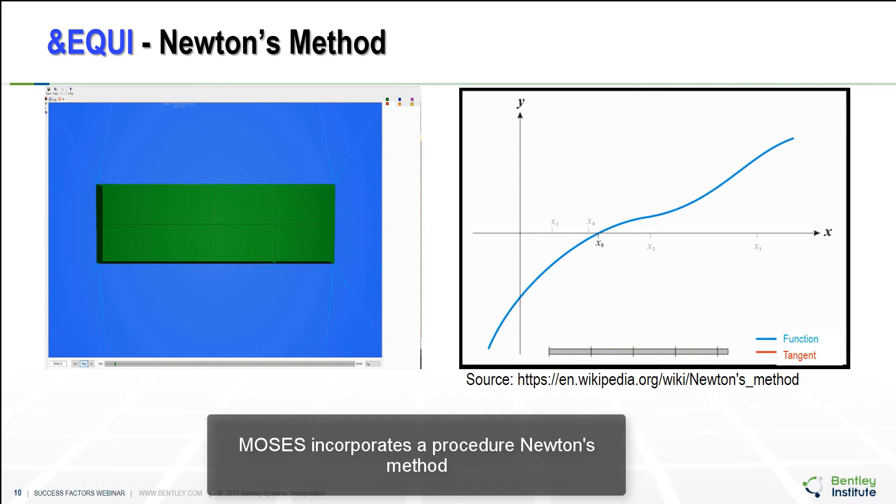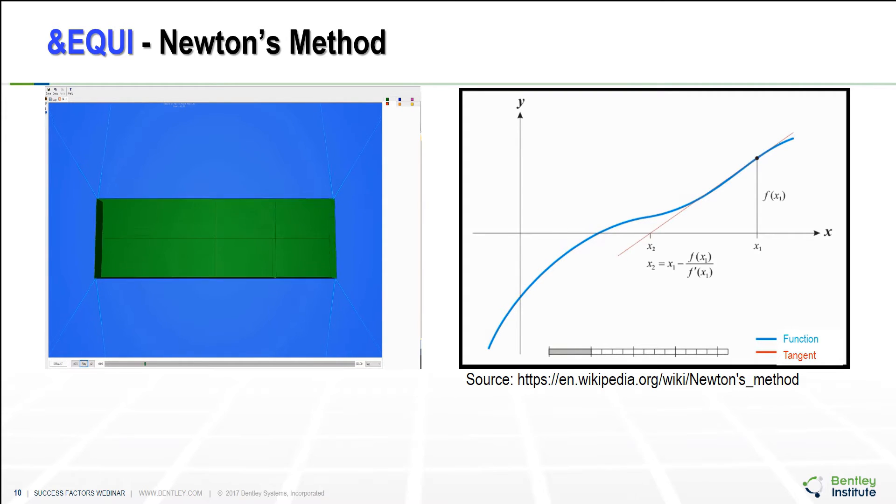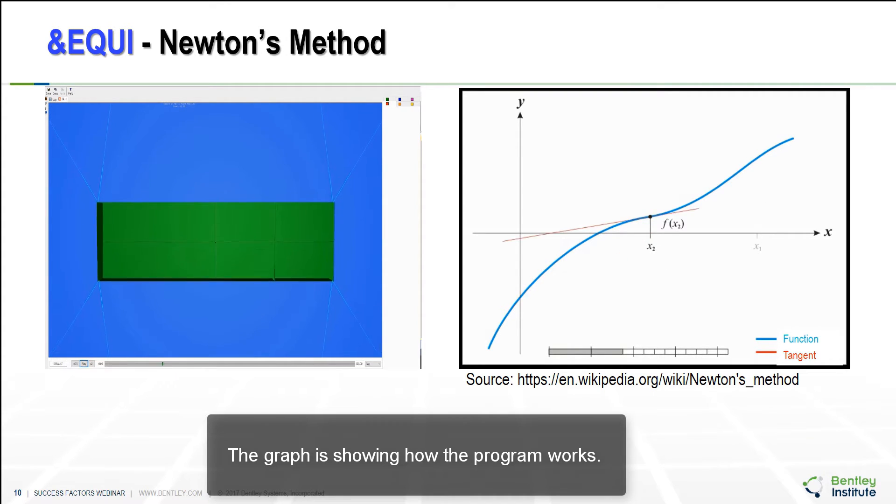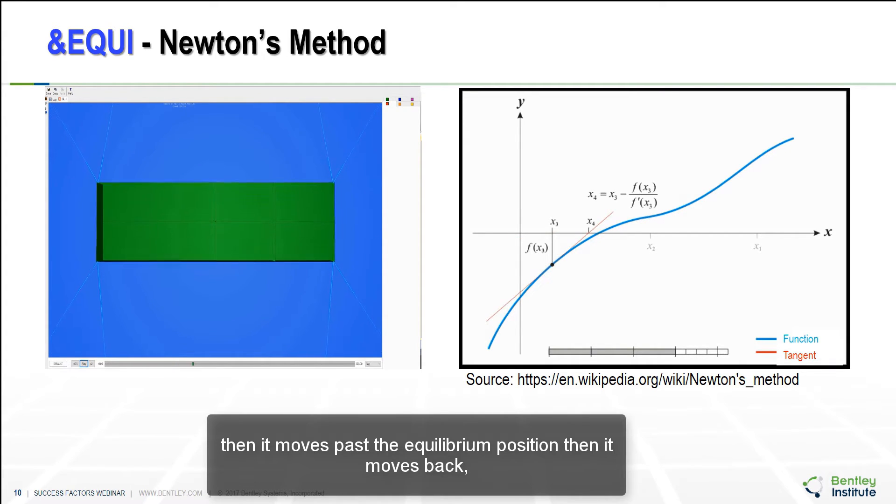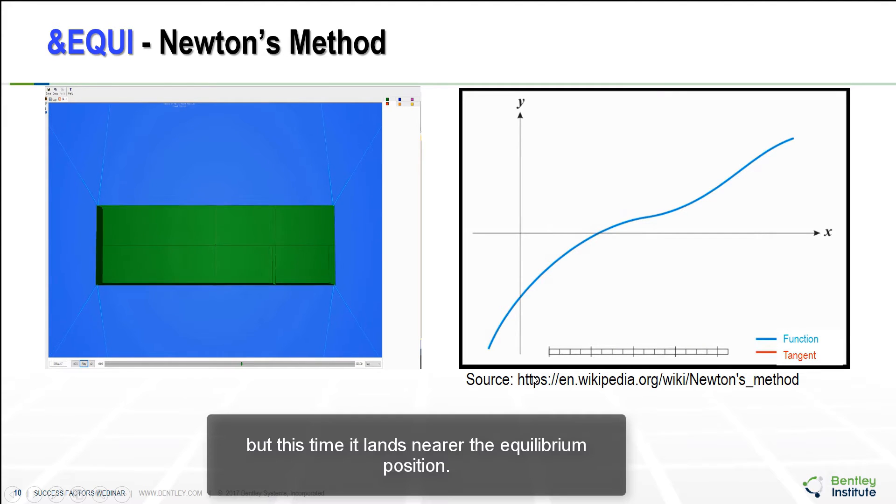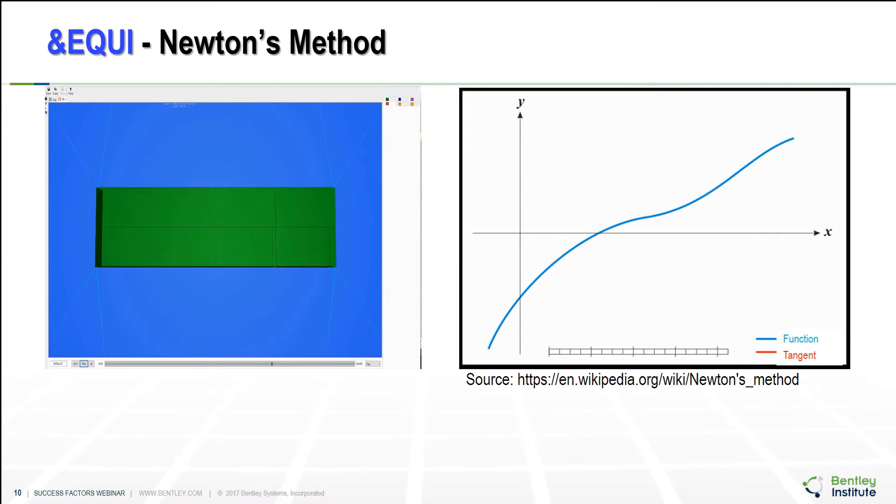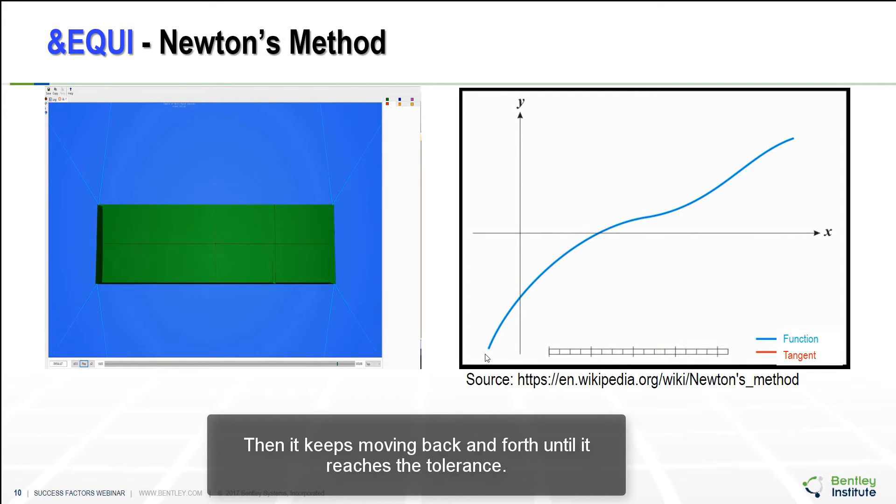Moses incorporates a procedure Newton's method to solve the non-linear equations for finding equilibrium. The graph is showing how the program works. It starts somewhere on the curve, then it moves past the equilibrium position, then it moves back. But this time it lines near the equilibrium position. Then it keeps moving back and forth until it reaches the tolerance.